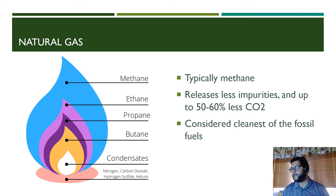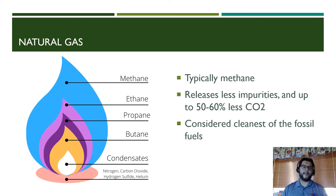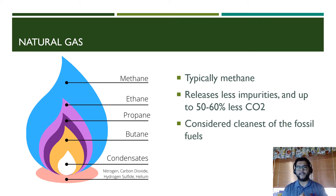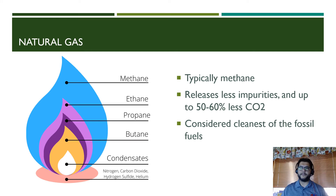Natural gas is typically things like methane, and it has much less impurities than coal. It reduces CO2 amounts by 50 to 60 percent compared to coal or oil, making it technically the cleanest form of fossil fuel. When you hear 'clean fossil fuel,' that means it won't release secondary pollutants and produces less CO2 — but it is still a fossil fuel and you're still adding CO2. Types include ethane, propane, butane, and condensates, which can be liquefied into LNG and used as a vehicle fuel or for powering a grid.